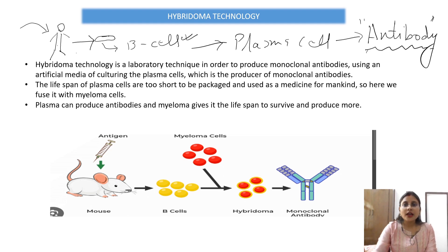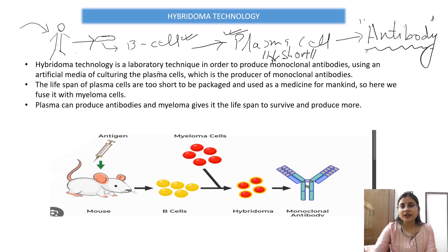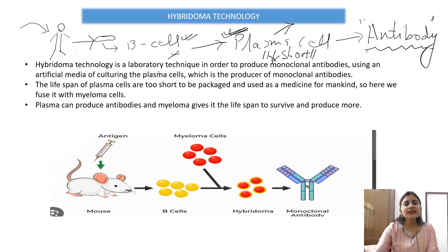In the laboratory, the problem is that plasma cells have a very short lifespan. Due to this short lifespan, we cannot risk wasting resources — we would produce plasma cells by activating B cells, they would produce antibodies, but the antibodies would also not live long. So in this case, we use hybridoma technology.